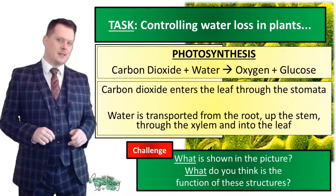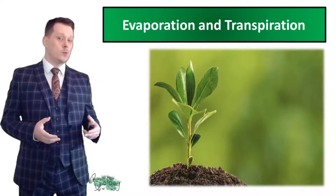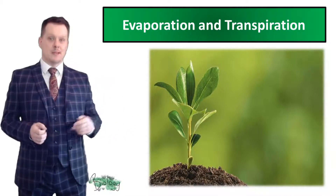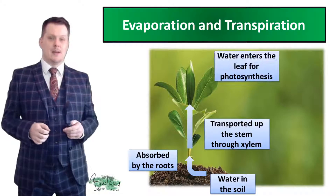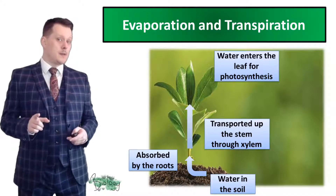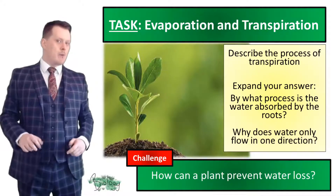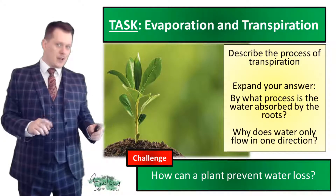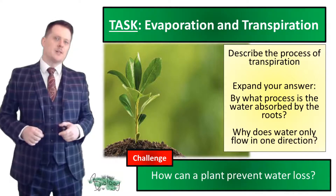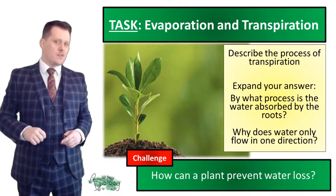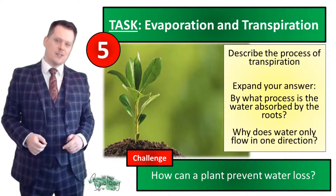This is called the transpiration stream. Transpiration is the movement of water through the plant: water starts in the soil, is absorbed by the roots, transported up the stem through the xylem, enters the leaf for photosynthesis, and some water evaporates and exits the leaf through the stomata. Now describe the process of transpiration in detail: by what process is the water absorbed by the roots, and why does water only flow in one direction? For a challenge, think about how plants can prevent water loss.